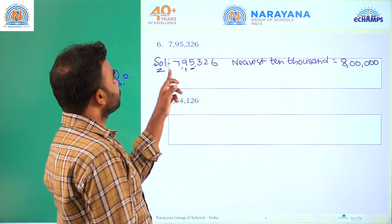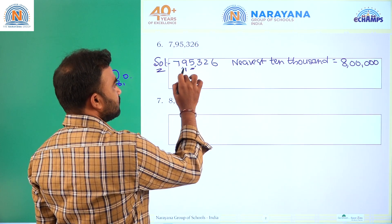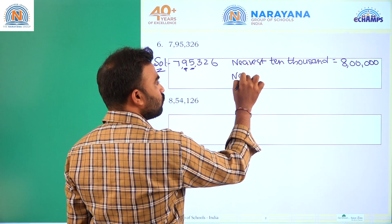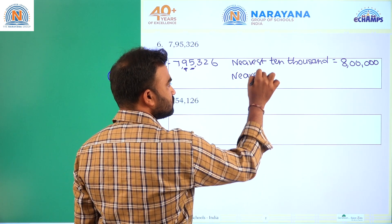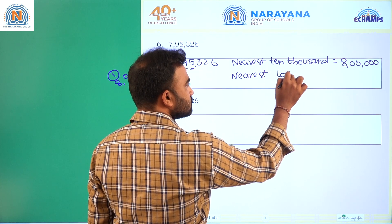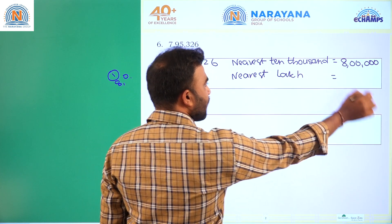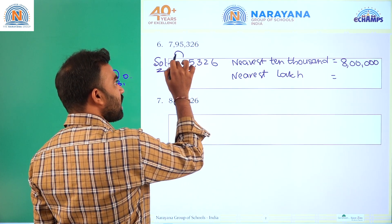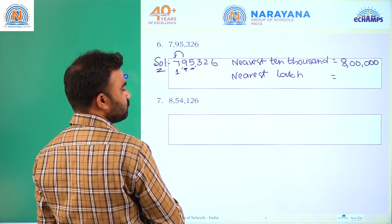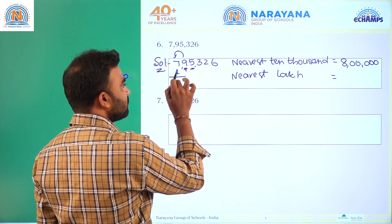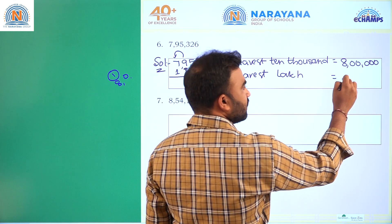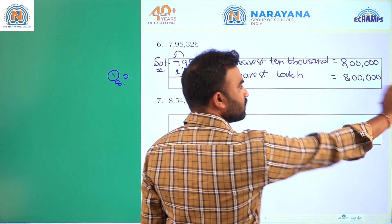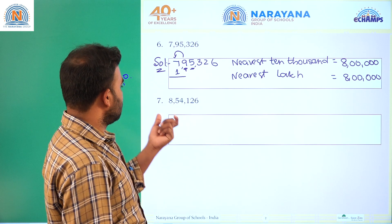For nearest lakh: the ten thousands place is nine. Since nine is greater than five, we add one to the lakhs place. Seven plus one is eight, so the nearest lakh is eight lakh with remaining places as zeros.